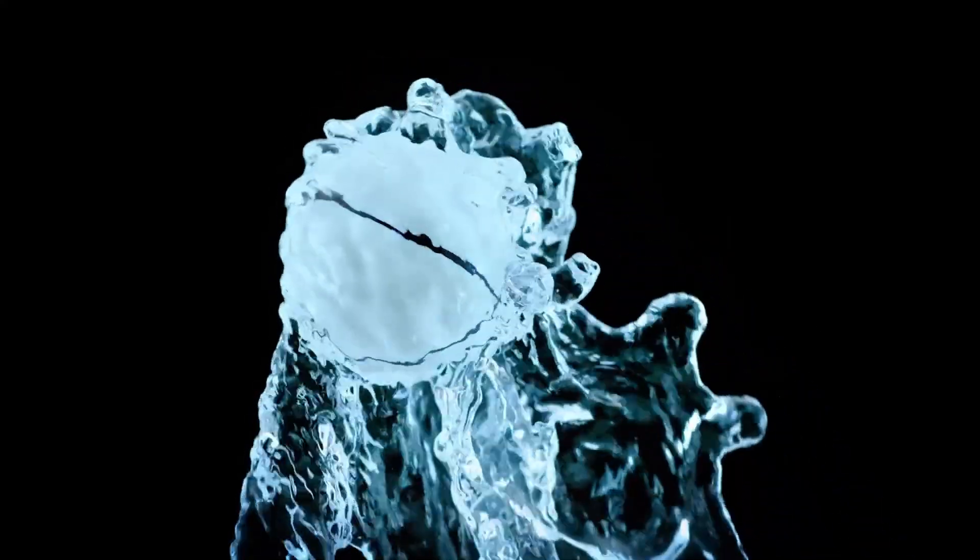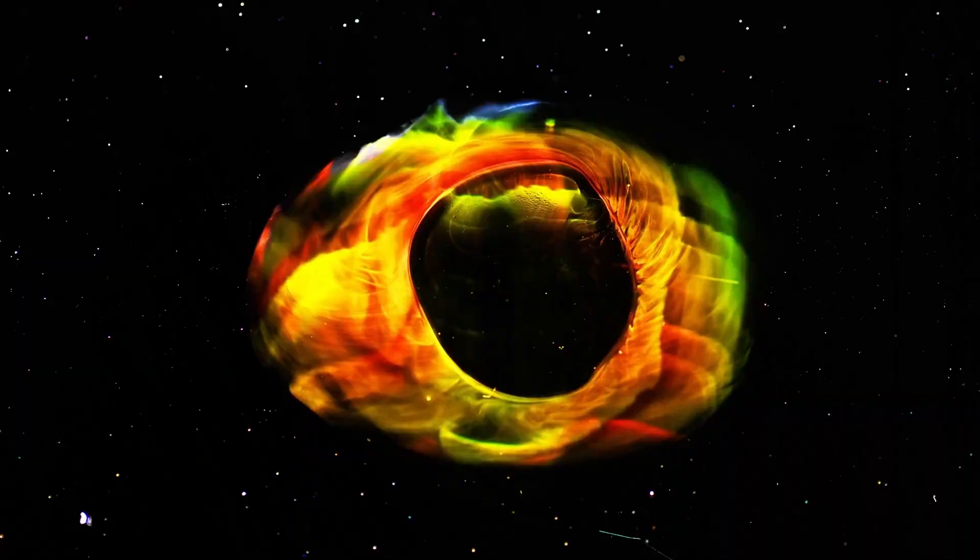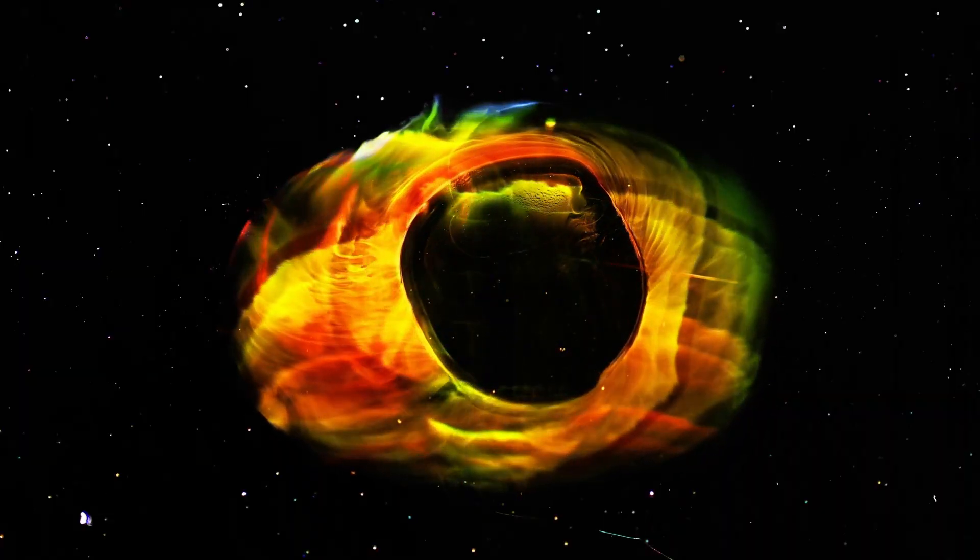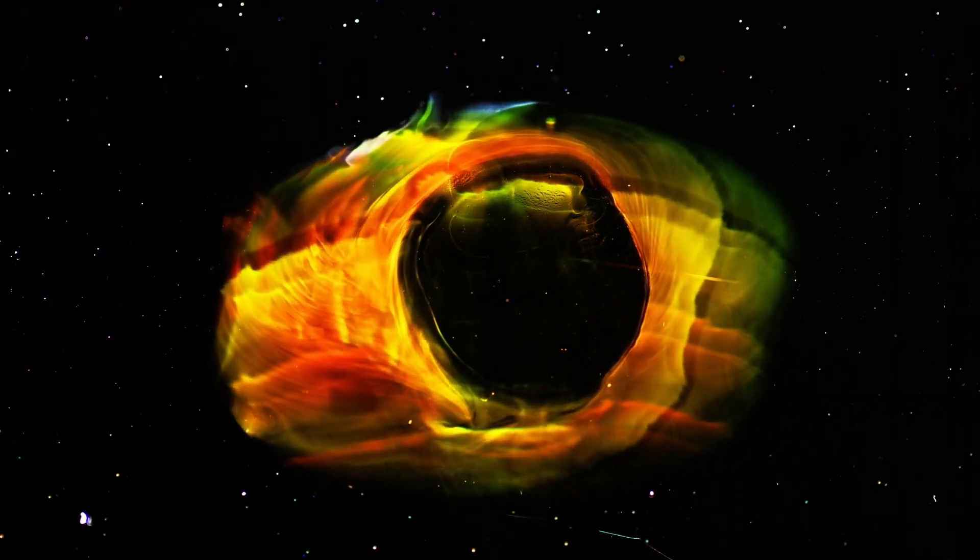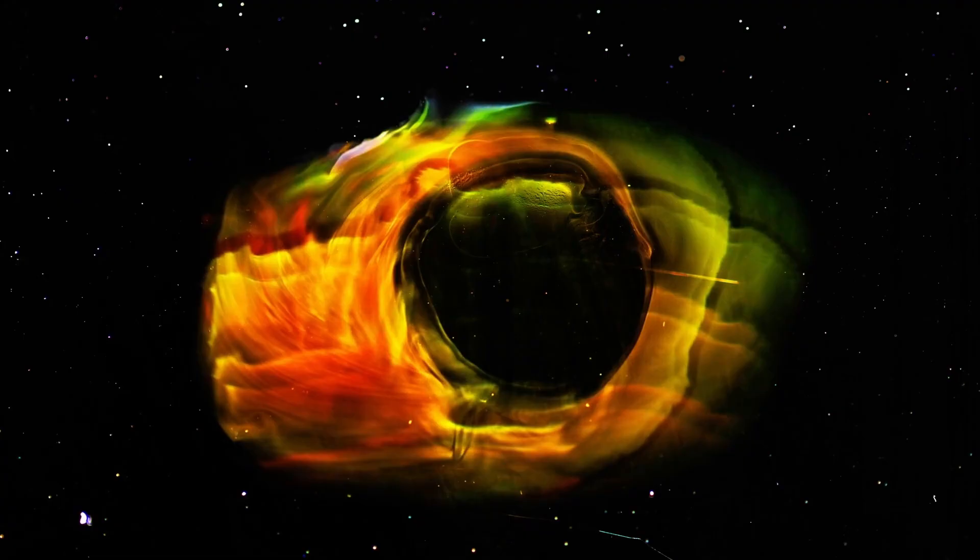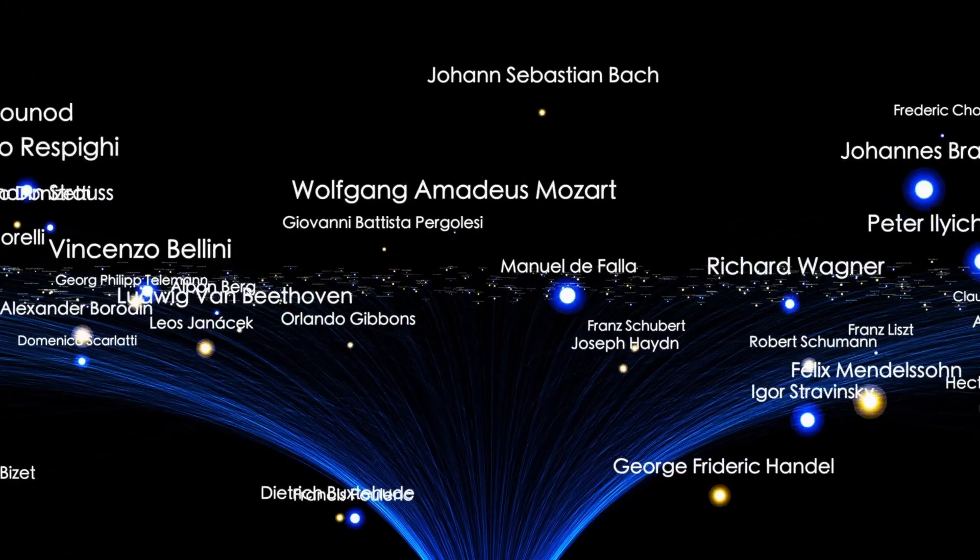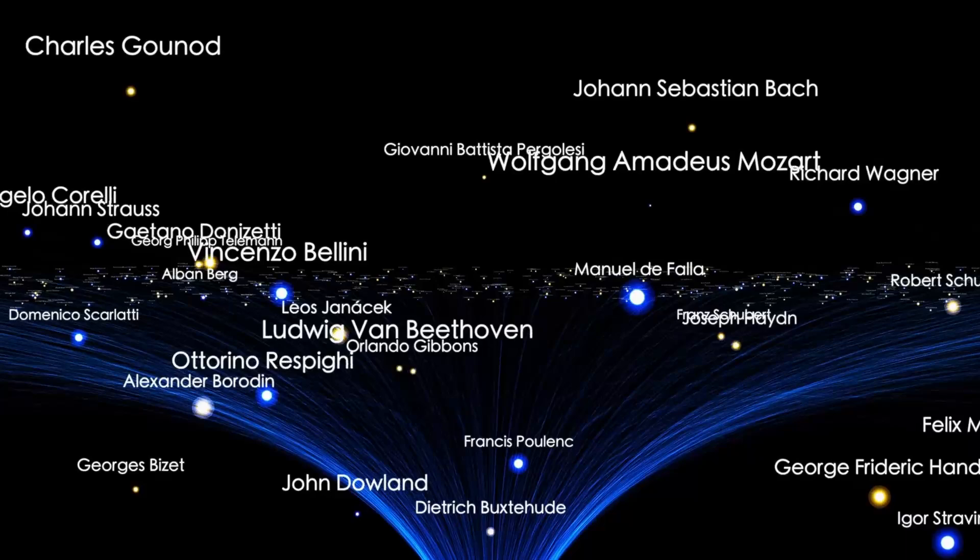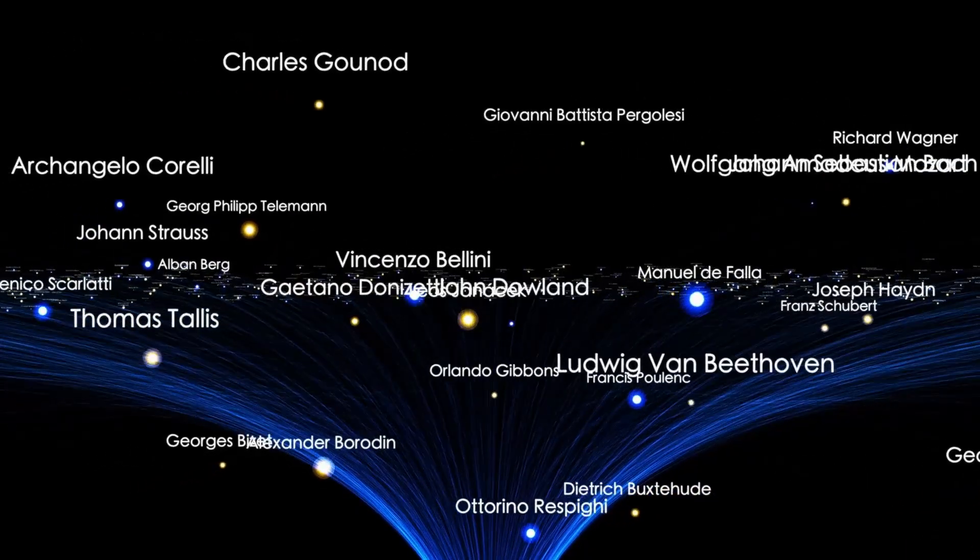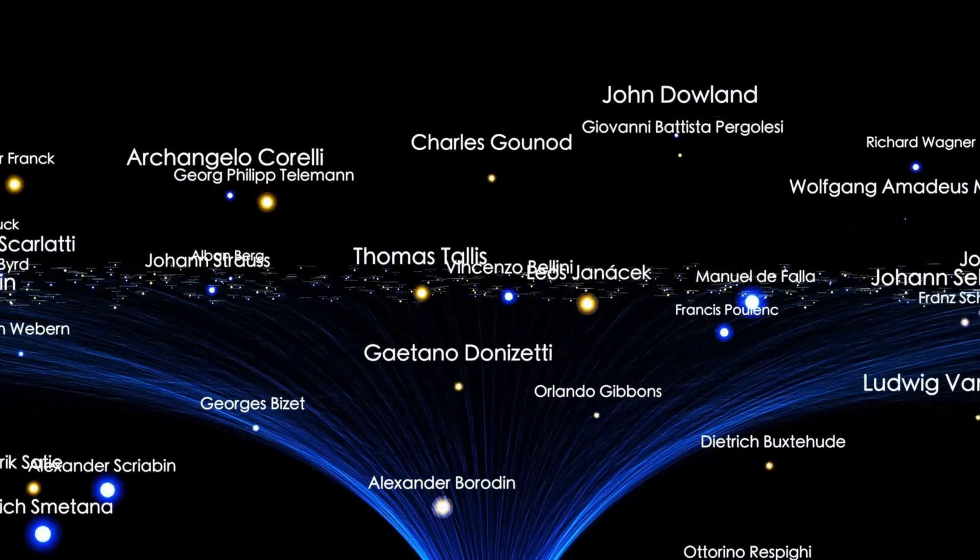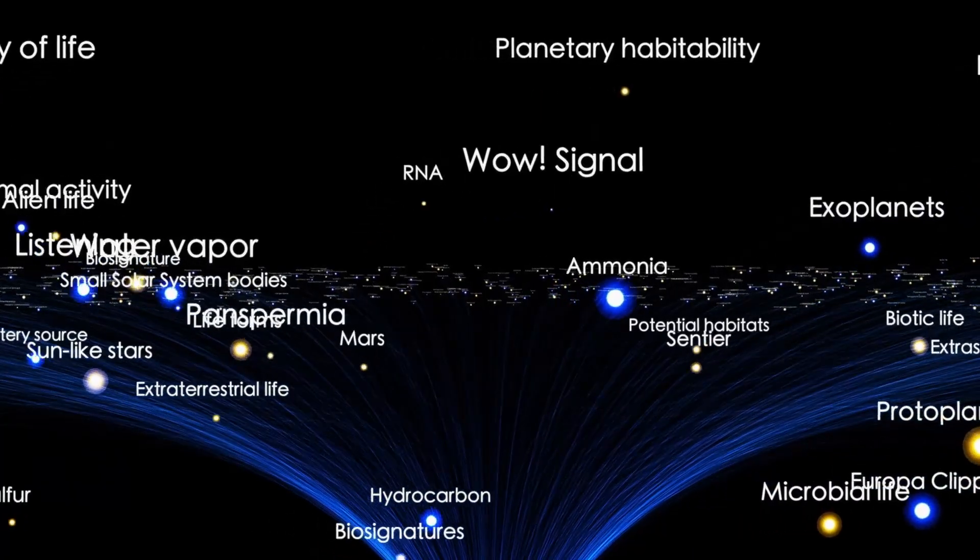Think about it. An interstellar object moving at impossible speeds presents the perfect target practice. How do you track something that fast? How do you communicate with it? How do you even know if your signals are getting through? Some experts believe this could have been a dry run, not to destroy 3I Atlas, but to see how a fast-moving interstellar body reacts to directed signals.